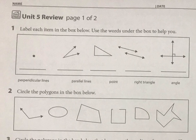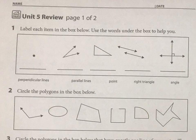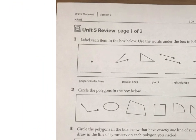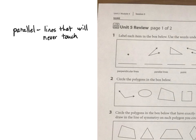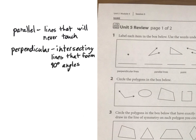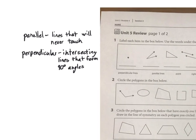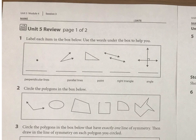In this first one, you're basically just looking at these little images and saying what they are. Parallel means lines that will never touch — even if they keep going, they will never touch. And then perpendicular means they're intersecting lines; they cross and form 90-degree angles. You just need to match up these words here with these things up here.